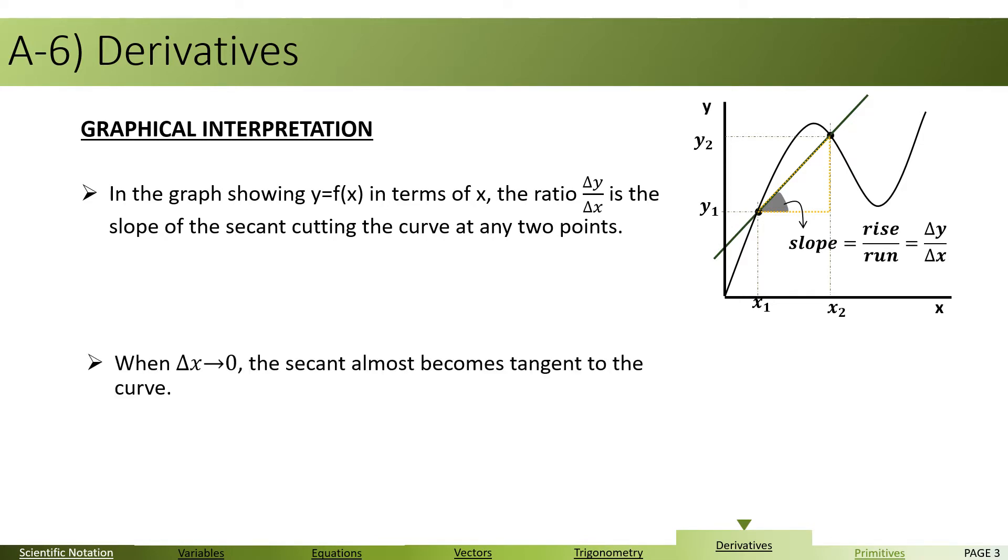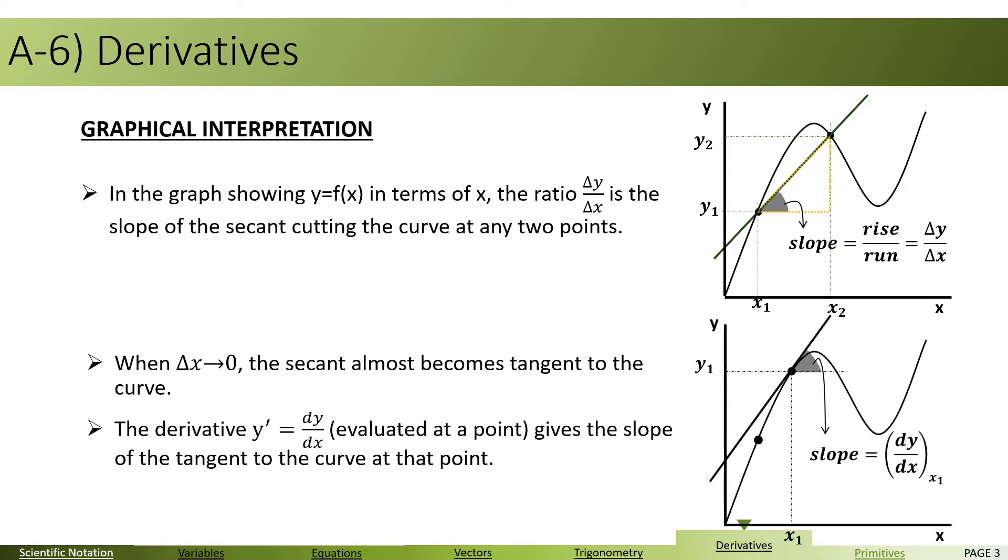However, if you assume that delta x now tends to zero, as if x1 and x2 are squeezed towards each other, the secant becomes almost a tangent. In this case, instead of writing delta y by delta x as delta x tends to zero, or delta x is too small, this notation becomes dy by dx.